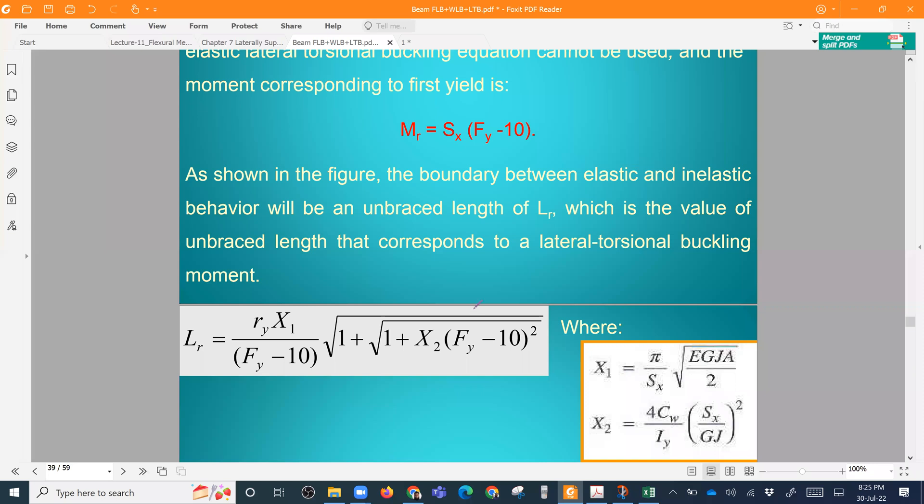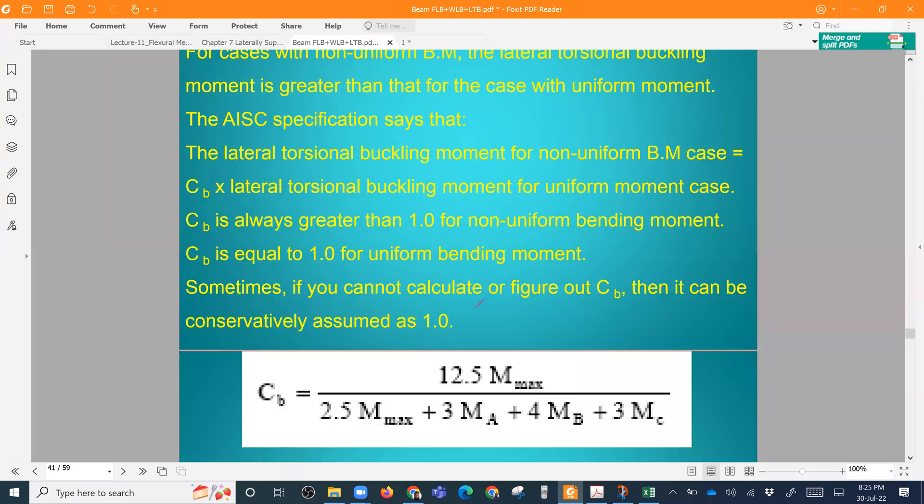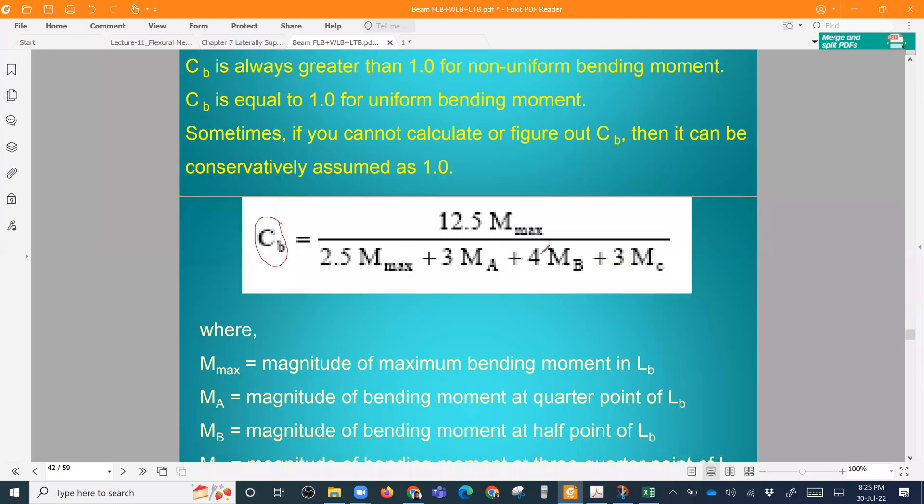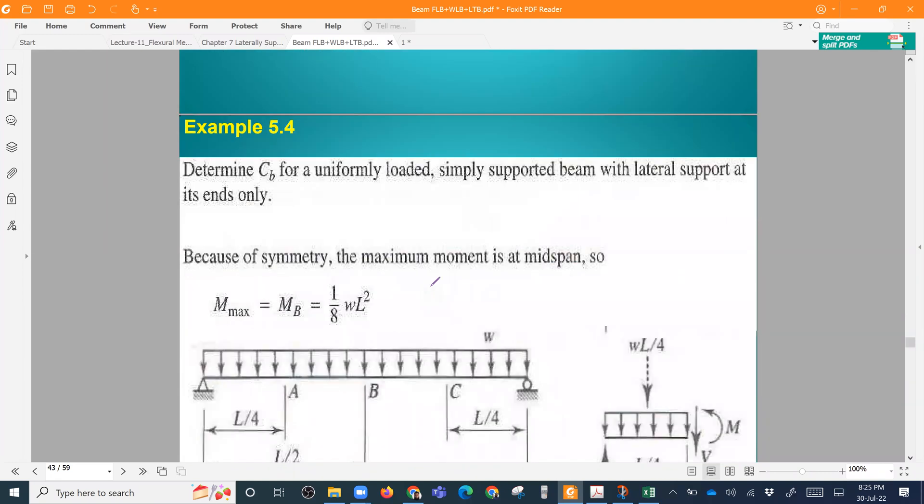Moment non-uniformity factor. So CB factor is the first method. First of all, we'll look into that math. Then we go for the other portion.